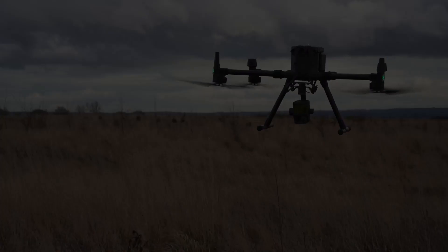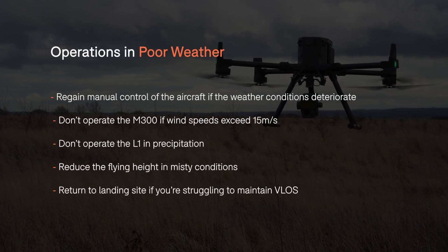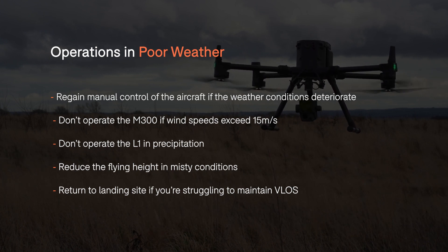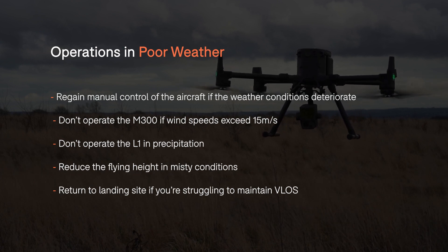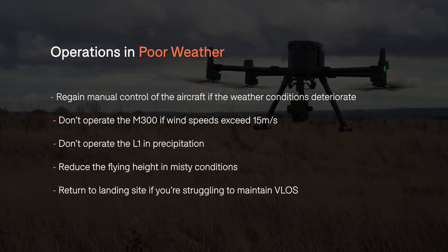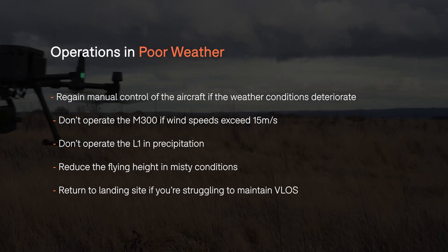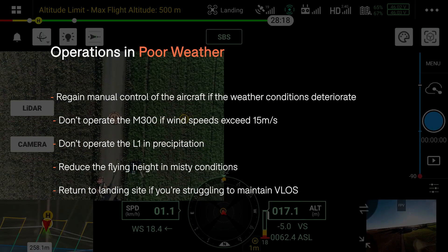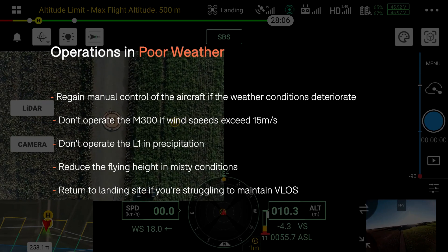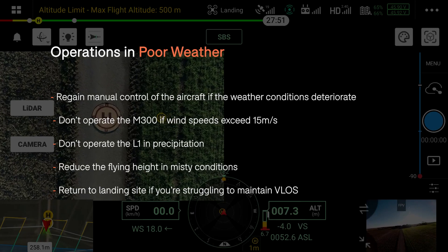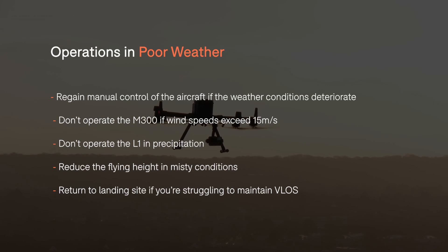If the weather conditions suddenly turn when conducting your flight mission, it's important to switch your M300 to manual flight mode by flicking the switch in the middle to ATTI mode and then back to GPS. Safely return the drone to the home point and wait for the conditions to ease. You should not be operating your M300 in wind speeds higher than 15 m/s. If it starts to rain while conducting your survey, the drone should be returned to the home point. The L1 can still technically fly in rainy conditions, but the final data set will be affected by the wet weather. For weather conditions that are foggy or misty, the drone can still be flown, however the flying height will need to be reduced so you can maintain visual line of sight on the drone at all times.